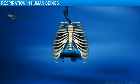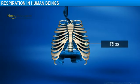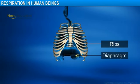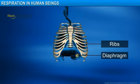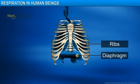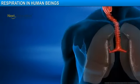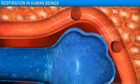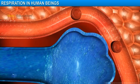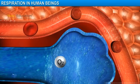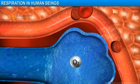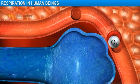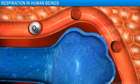When we breathe in, we lift our ribs and flatten our diaphragm. As a result, the chest cavity becomes larger. Air gets sucked into the lungs and fills the expanded alveoli. The oxygen in the alveolar air is taken in by the red blood cells in the alveolar blood vessels.